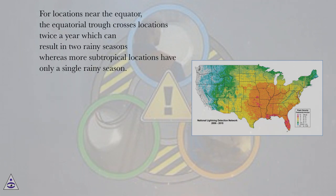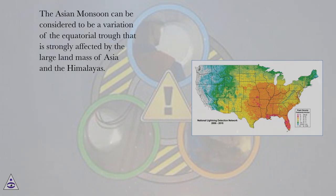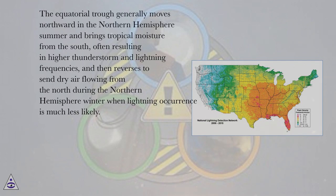For locations near the equator, the equatorial trough crosses locations twice a year, which can result in two rainy seasons, whereas more subtropical locations have only a single rainy season. The Asian monsoon can be considered to be a variation of the equatorial trough that is strongly affected by the large land mass of Asia and the Himalayas. The equatorial trough generally moves northward in the northern hemisphere summer and brings tropical moisture from the south, often resulting in higher thunderstorm and lightning frequencies, and then reverses to send dry air flowing from the north during the northern hemisphere winter when lightning occurrence is much less likely.